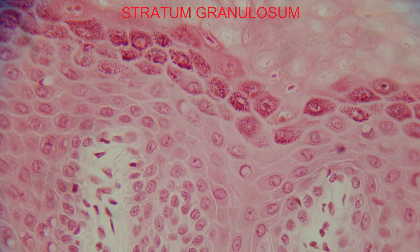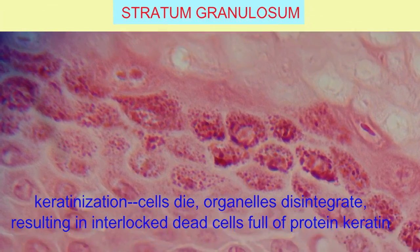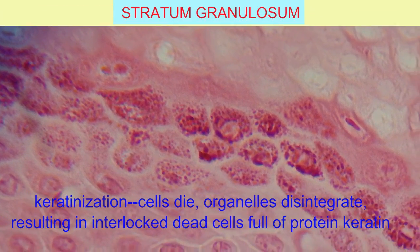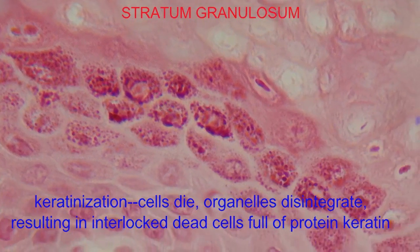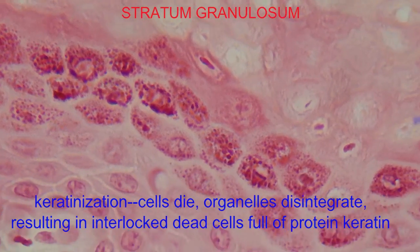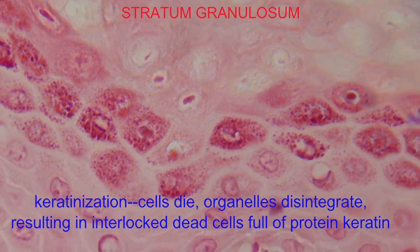As epidermal cells migrate away from the deep stratum basale layer where they were produced, they reach the third layer, the stratum granulosum, which may be one to five cell layers thick.